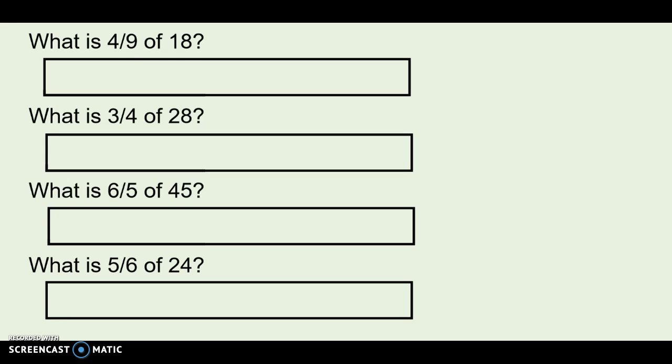So 4 ninths of 18. If this entire bar represents 18, from 0 to 18, if I split it up into ninths, I should have nine sections: 1, 2, 3, 4, 5, 6, 7, 8, 9. How big would each of those sections be? If I have nine sections and it has to make 18, then it makes sense that each of these should be 2. Right? 2, 4, 6, 8, 10, 12, 14, 16, and 18. If I need 4 ninths, I need 4 of those sections. So 1, 2, 3, 4. 2, 4, 6, 8. I get 8.